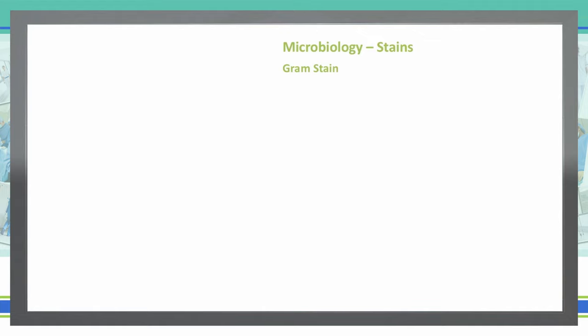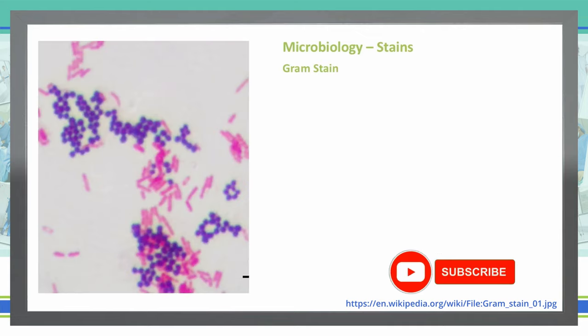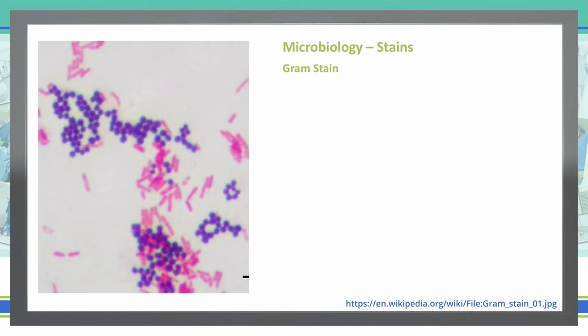The first stain we'll talk about is the most common one, and that's a gram stain. As you can see in this picture, this microscope slide shows us two different colors of bacteria after it's undergone a gram stain. The purple is our gram positive, as you can see in the circles, and the pink is gram negative with the rods.